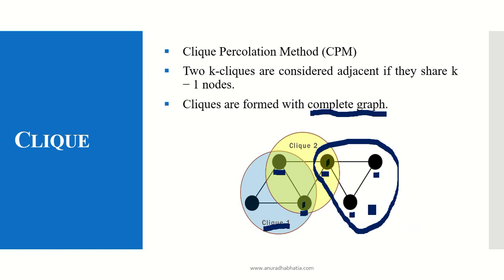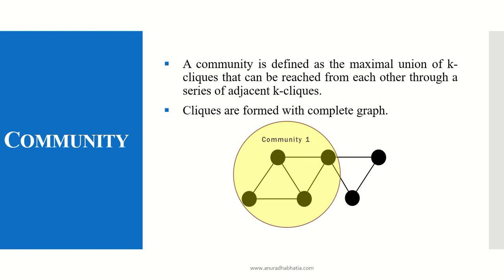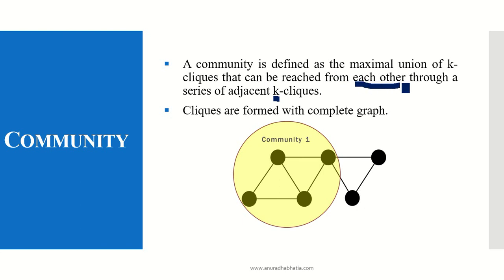Out of these cliques, we have to see what is a community. A community is defined as a maximal union of K cliques that can be reached from each other through a series of adjacent K cliques. K can be defined as any number. In the previous example, when I formed the clique of 3 nodes, my K value was 3. When K equals 3, it forms a triangle and is known as a clique of value 3. When I say they can be reached from each other, there has to be a common link between the 2 cliques to form a community.